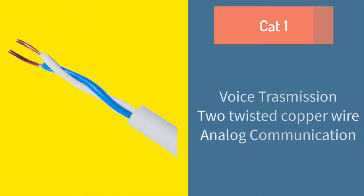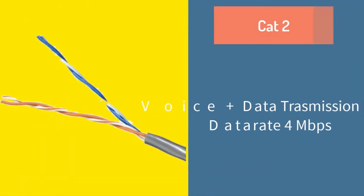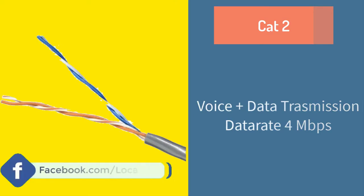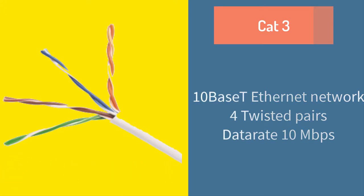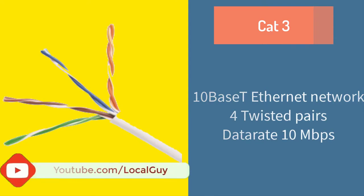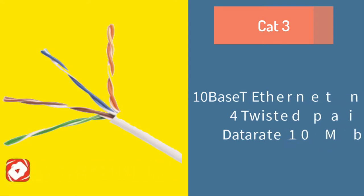Cat1 was an old cable generally used for voice transmission in home and office. It consisted of two insulated copper wires twisted around each other, mainly designed for analog communication. Cat2 cable was capable of voice plus data transmission, supporting data rates up to 4 Mbps. Cat3 cable supported 10BASE-T Ethernet, had 4 twisted pairs, and supported data rates up to 10 Mbps, which is too slow but still found in some older offices.